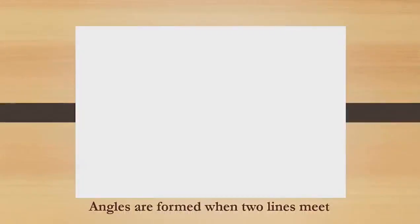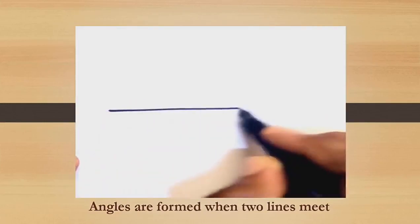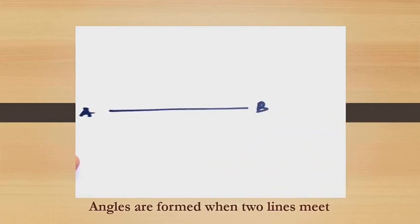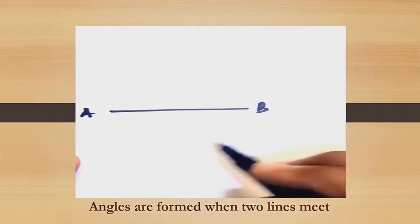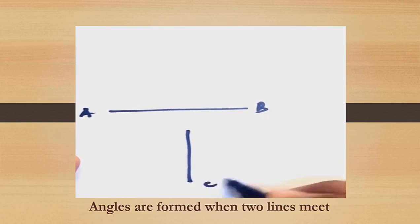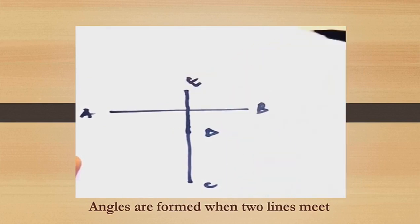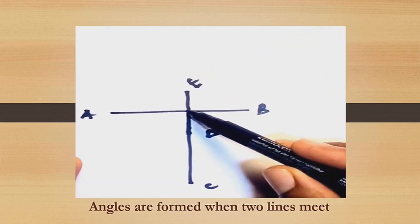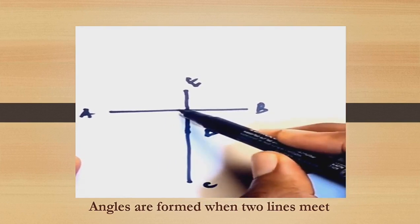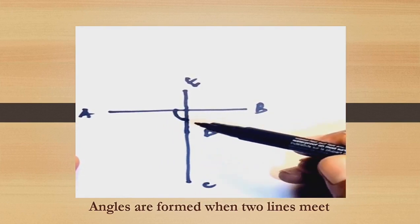What is an angle? An angle is formed when two lines meet. For example, we have a line AB and another line CD, such that line CD extends to E. The point at which AB cuts the extension of CD, an angle is formed.